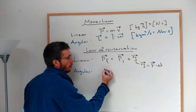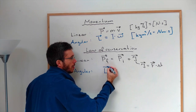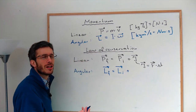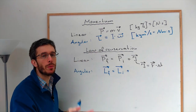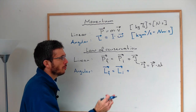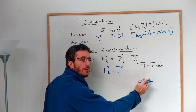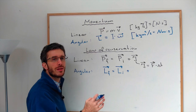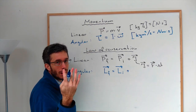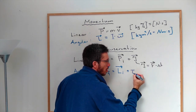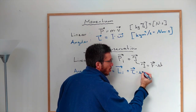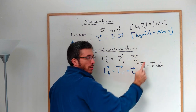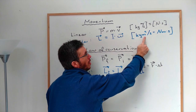Instead of P we have L: angular momentum final equals angular momentum initial plus the change. The change doesn't have its own standard letter, so we just put the rotational equivalent of force times time. What is the rotational equivalent of force — what's needed to bring an object into rotation? It's torque. So: L_final = L_initial + torque × time.